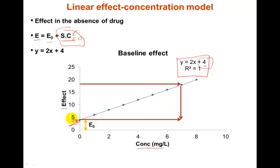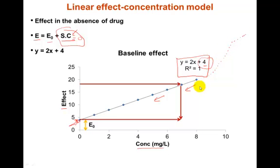So the general form is Y = Mx + C, or E = E₀ + S times C. This equation is good enough for interpolation, but not for extrapolation, because we have no clue how the data points behave beyond the measured range. It is valid only for interpolation beneath the maximum concentration.